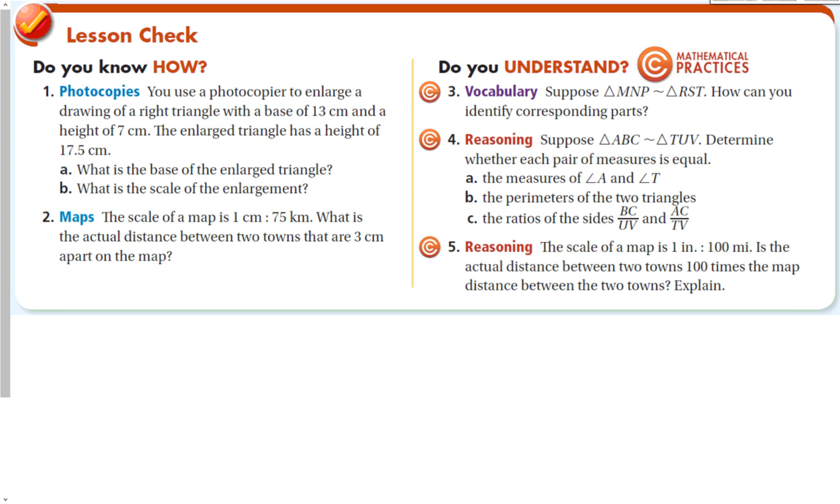Let's make sure we understand everything in this lesson. We can use a photocopier to enlarge a drawing of a right triangle with a base of 13 and a height of 7. The enlarged triangle has a height of 17.5. If we draw this out, here's my first right triangle with a base of 13 and a height of 7. My second right triangle, which is going to be a little bigger, has a height of 17.5. And now I can set up my proportion: 7 over 17.5 equals 13 over X. And then I can figure out the scale of this enlargement by setting this ratio equal to 1 over something.